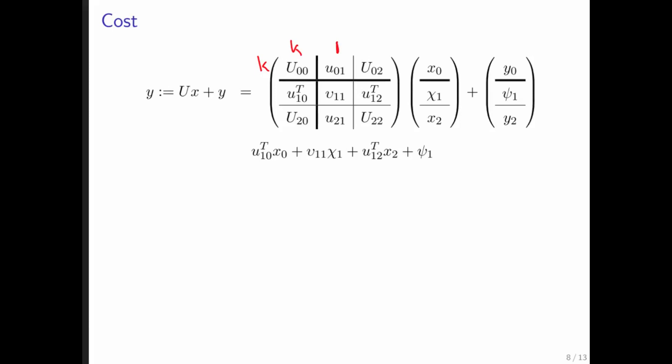Notice that this column has width 1, this row has height 1. Then this right here is N minus K minus 1 in row size, and this right here is N minus K minus 1 in column size.